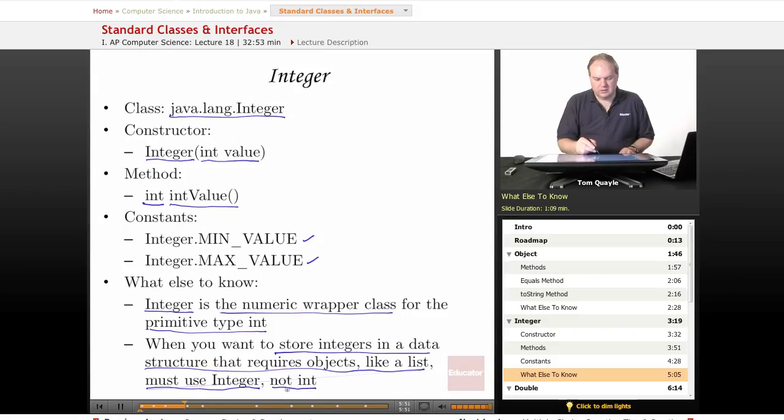For simple calculations or variables, it's much more convenient to use the primitive type int. But if you're going to be storing it in a list or some other structure that requires an object, then you cannot use the primitive type int. And that's the primary application that the Integer class is provided to address.